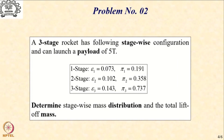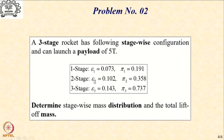Let us now move over to problem number 2. In this problem, we have a 3-stage rocket which can launch a payload of 5 tons. The first stage structural ratio is 0.073 and its payload ratio is 0.191. For the second stage, the structural ratio is 0.102 and the payload ratio is 0.358. For the third stage, the structural ratio is 0.143 and the payload ratio is 0.737. Our task is to determine the stage-wise mass distribution and arrive at the total liftoff mass.